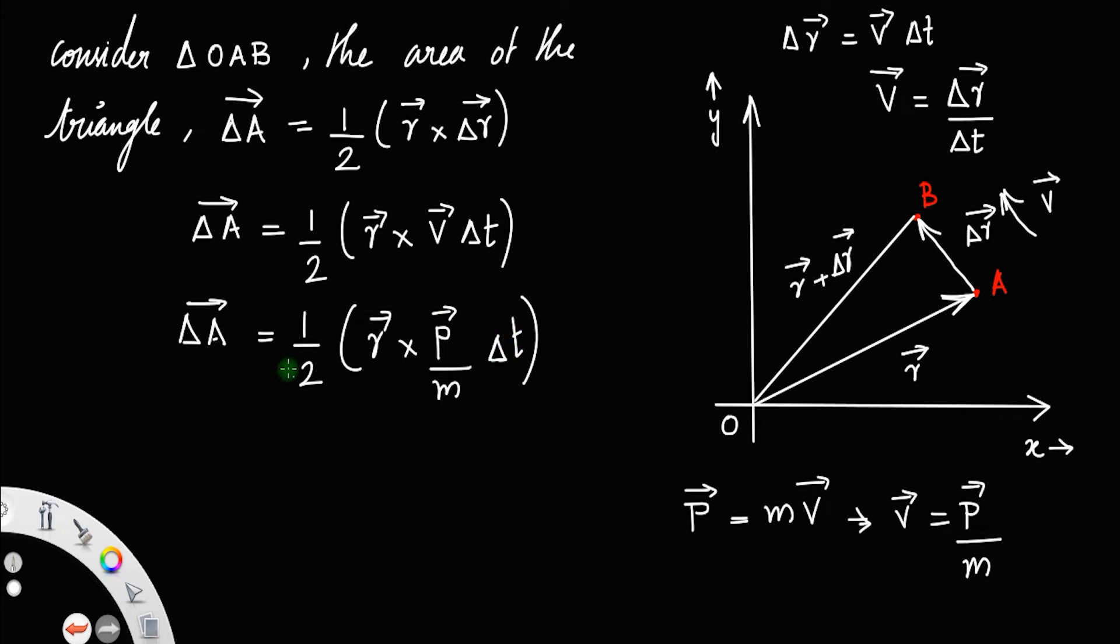You can take this delta t to the left, so it will become delta A by delta t is equal to 1 by 2, you can take this m also, to 1 by 2m r cross p.